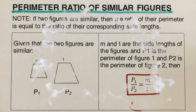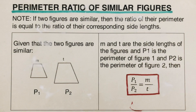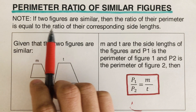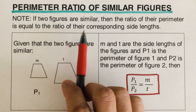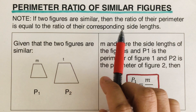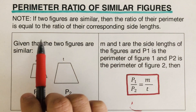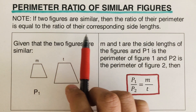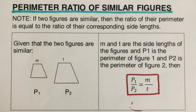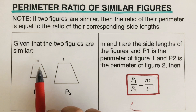Hello everyone. Today we're going to cover the parameter ratio of similar figures. I put a little note over here: if two figures are similar, then the ratio of their parameter is equal to the ratio of their corresponding side lengths. So these are the corresponding side lengths.